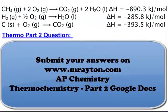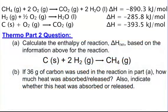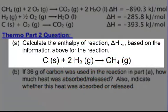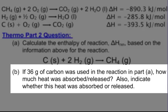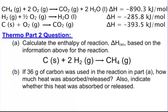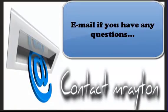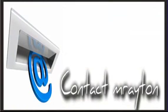The question you want to finish for thermo part two is this: I've given you three reactions and three heats of reaction. Part A — calculate the enthalpy of the reaction for: carbon plus two hydrogen gases gives methane. Part B — if 36 grams of carbon was used in the reaction from part A, how much heat was absorbed or released? Also indicate whether the heat was absorbed or released. Write down your work, and I'll email you back to let you know if you're good to go.